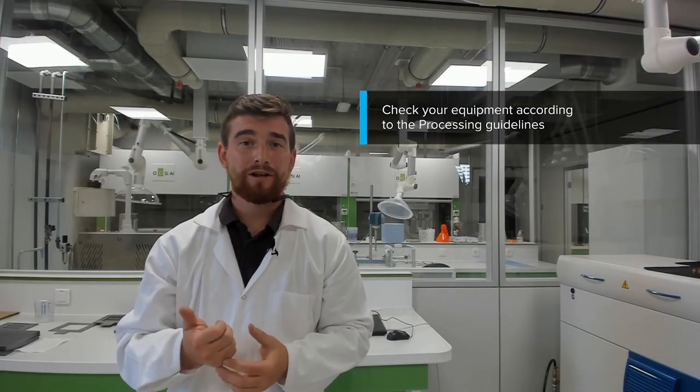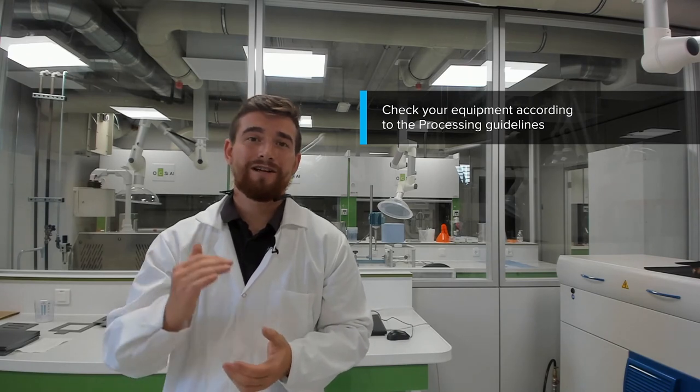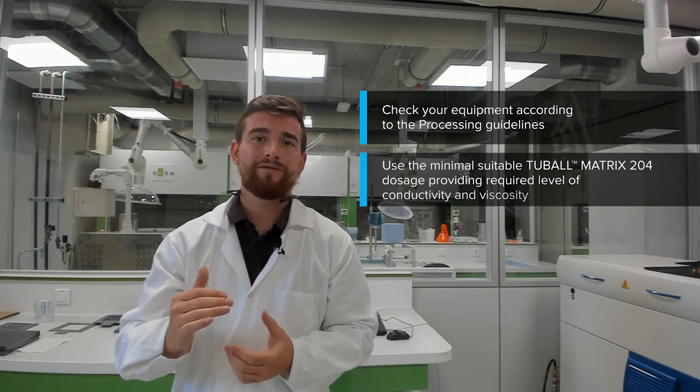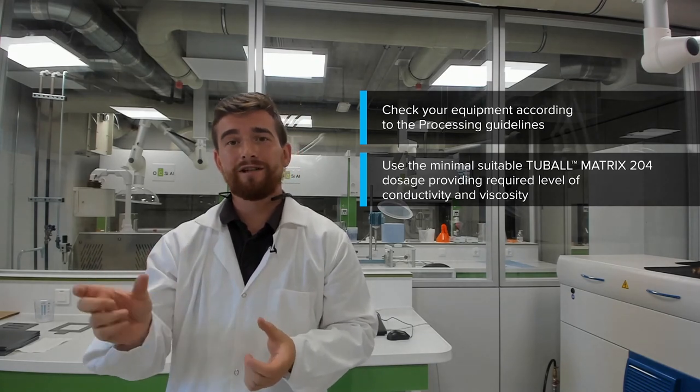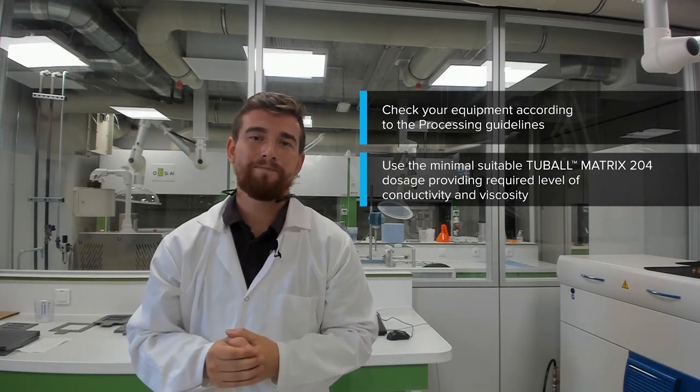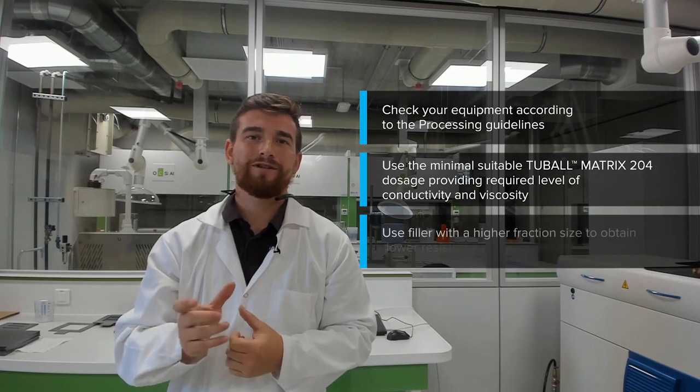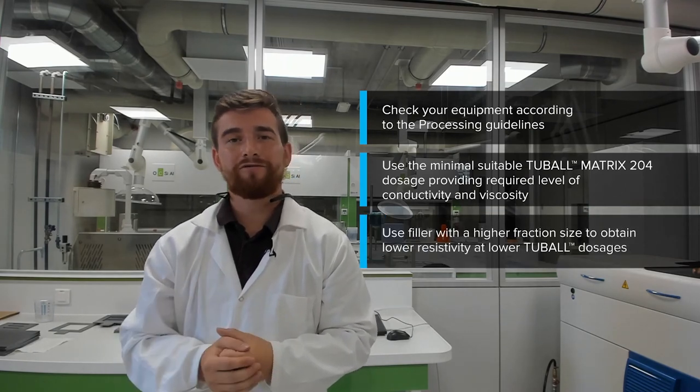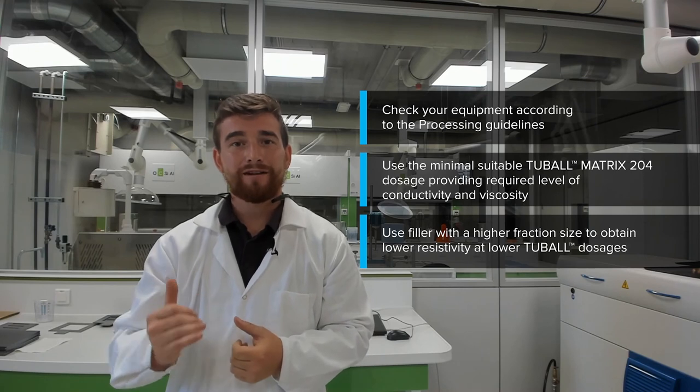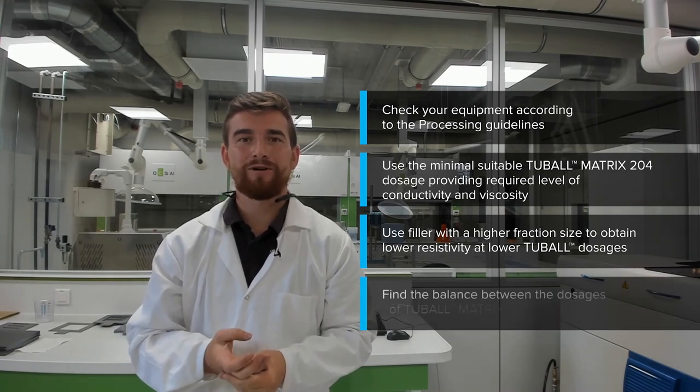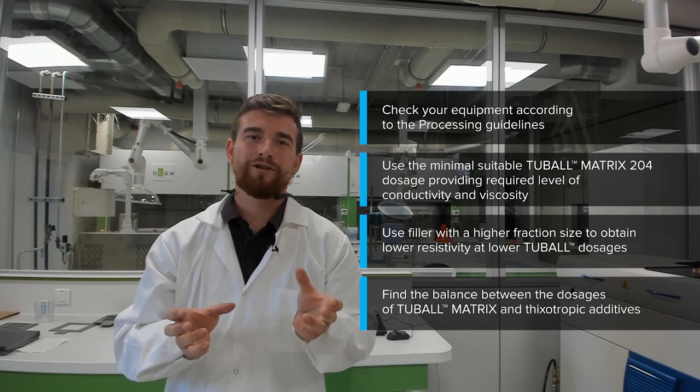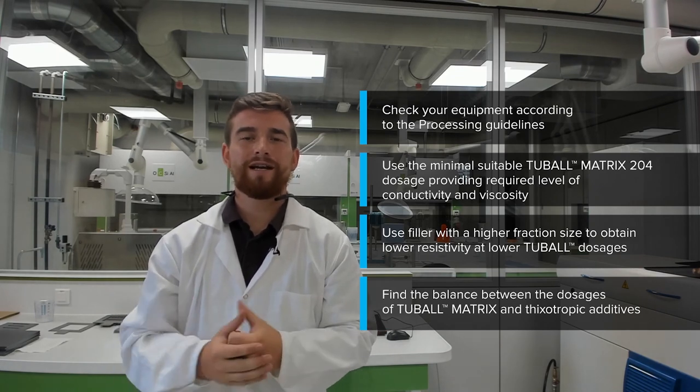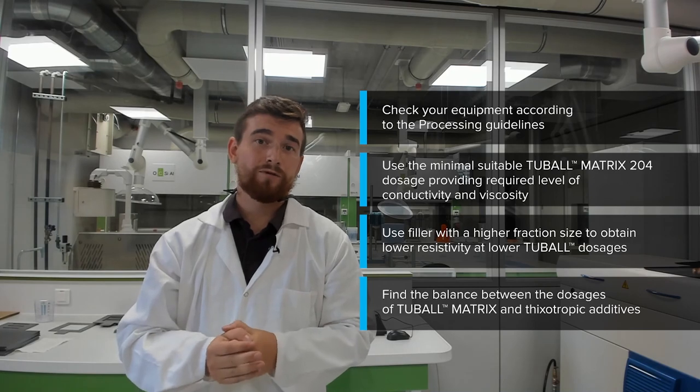So now let's summarize the most important parts of this video. First, using the good equipment as well as reading the processing guidelines. Then, reducing the level of Tubal Matrix in your system which still gives you your required resistivity. The third part was using thixotropic additives with larger particle sizes so that you get the lowest level of resistivity. And the last point was finding the balance between Tubal Matrix loadings and thixotropic additive which gives you the benefits of conductivity as well as thixotropic properties.